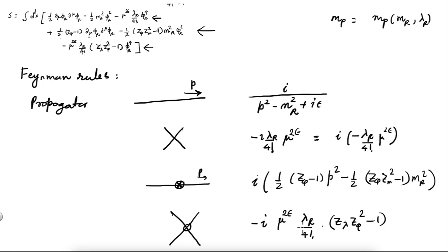We also always have momentum conservation at each vertex — a delta-function (2 pi)^d delta^d of the sum of all momenta entering. This is now d-dimensional momentum conservation.